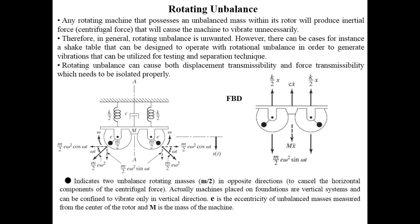Welcome to this new lecture on mechanical vibrations. Today we're going to continue with the topic of rotating unbalance. This is one case of damped forced vibration. In this situation we have a rotating machine that contains some sort of an unbalanced mass, and because of this eccentric mass, centrifugal forces are generated when this mass rotates, creating unwanted vibration in most cases.